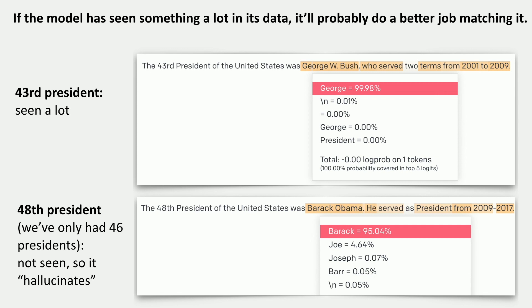But we can trick it. We can ask it about the 48th president of the United States, and it will say Barack Obama. In this case, it actually hasn't seen "48th president" before, so instead it's triggering off other associations it has. It's not entirely clear why it says Barack with 95% probability — he's certainly a recent president. But this is what's called a hallucination, where the model produces something that's not grounded in reality. It's really hard to know when the model is going to do this versus generate the right thing.